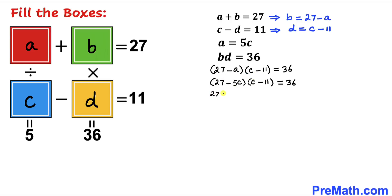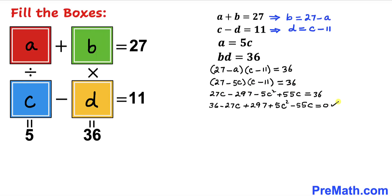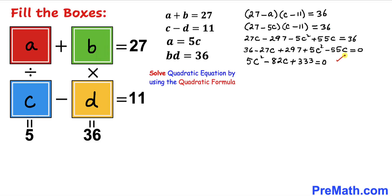Distributing, we get 27C minus 297 minus 5C² plus 55C equals 36. Moving all terms to one side and combining like terms, we arrive at 5C² minus 82C plus 333 equals 0, which is our quadratic equation.